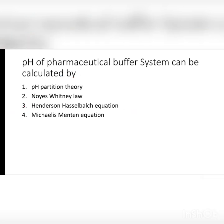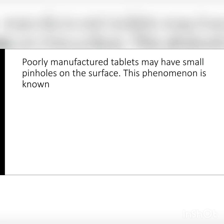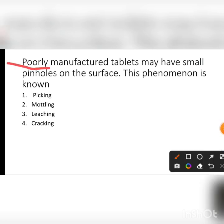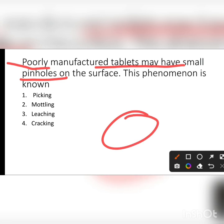Option number 3. Next question: poorly manufactured tablets may have small pinholes on the surface. This phenomenon is known as — options are picking, mottling, leaking, and cracking. The answer is that this phenomenon is known as picking, caused by the upper punch.